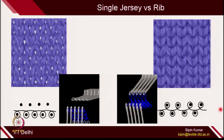Let's move to the first one — rib design. I have already introduced rib, where in the same course you have technical front and back loops. On the machines, we can create rib design very simply. This can be created on a manual V-bed machine also. We have single jersey fabrics where the loops are created on one bed, and double jersey fabrics where the loops are created on both beds.